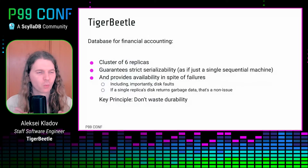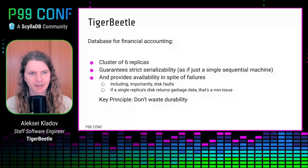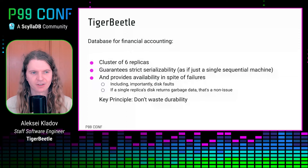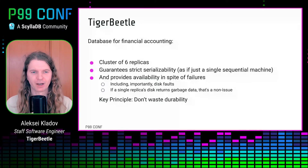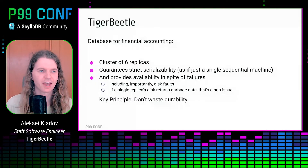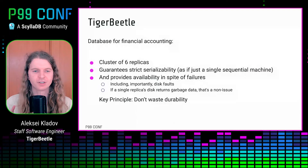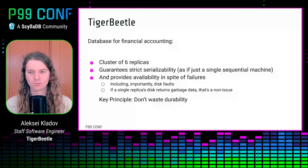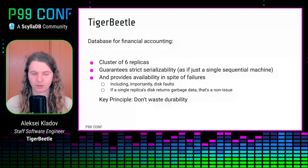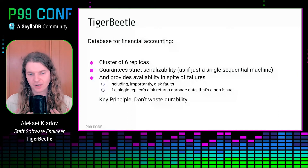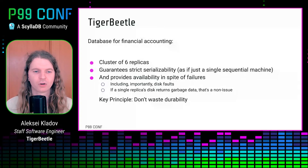To set up the context: what is TigerBeetle? TigerBeetle is a distributed database for financial accounting. Physically, it is a cluster of six distinct replicas — six different machines — which nonetheless behave as if it is just a single machine. What is unusual about TigerBeetle relative to other databases is that it provides availability in spite of disk faults. When TigerBeetle writes data to a local hard drive or SSD, it doesn't necessarily assume that the results are guaranteed to be durable. The principle is not wasting durability. If at some point a disk returns an error, you shouldn't just fail. Instead, you should use the copy of the data on one of the other six replicas to repair yourself and continue operating.